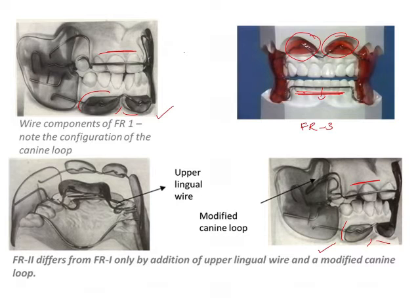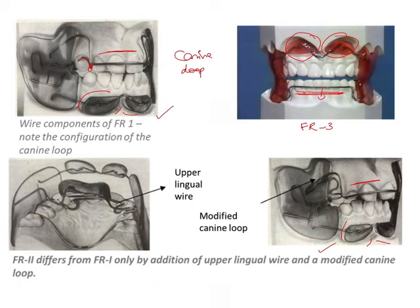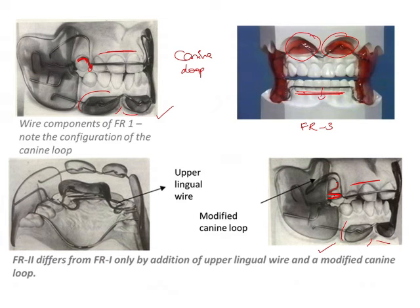Between FR 1 and FR 2, the identifying feature is the canine loop. In FR 1, the canine loop runs interproximally — it comes from between the lateral incisor and the canine and runs gingivally at the gingival margin of the canine, so it looks somewhat like a C-clasp. In FR 2, it does not run interproximally; it comes buccally from above and is an actual loop. So it looks like a proper loop, compared to FR 1 where it resembles a C-clasp.